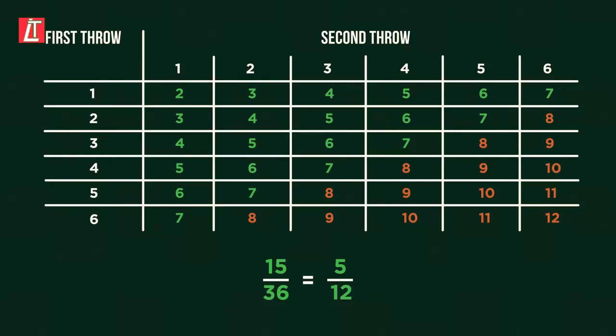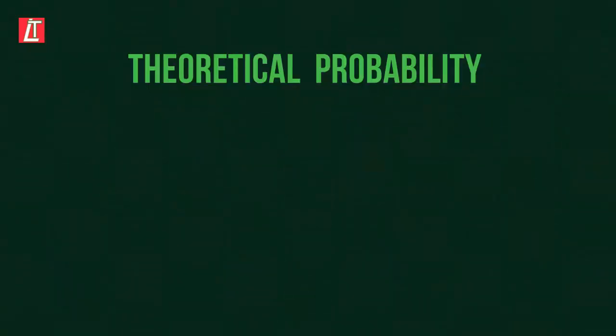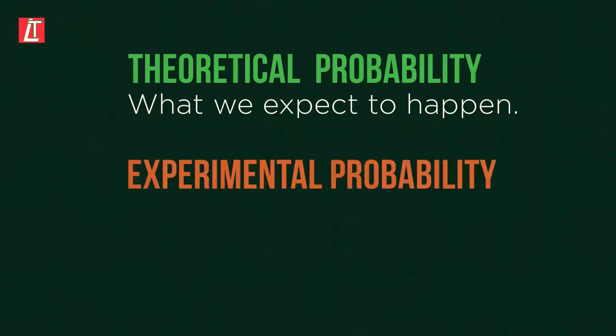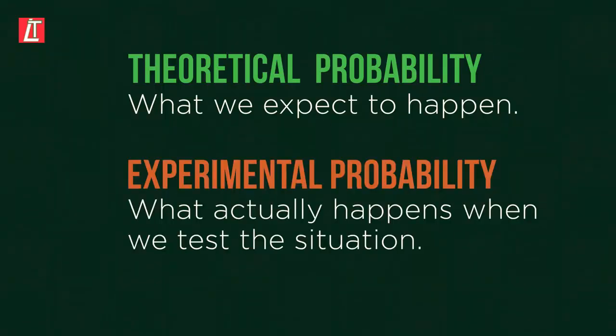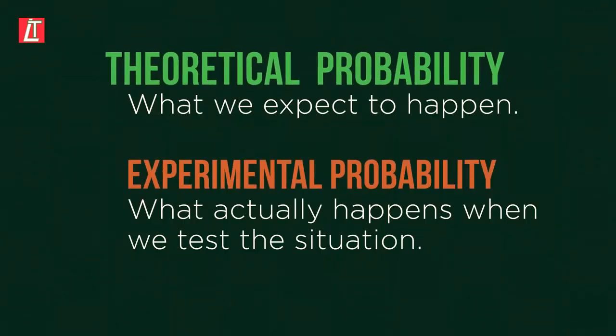These outcomes are of course entirely theoretical. Theoretical probability is what we expect to happen, whereas experimental probability is what actually happens when we test the situation. Generally, the more we try, the closer the experimental probability gets to the value of the theoretical probability.